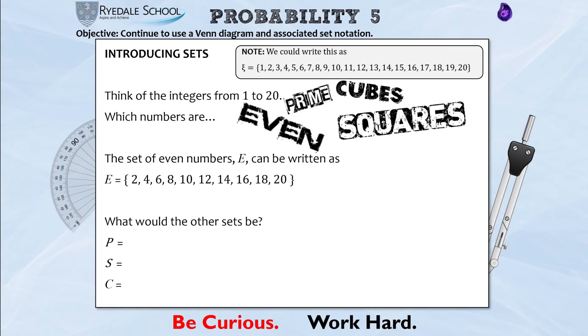Let's get our brains awake. I want you to think of the integers, so the whole numbers between 1 and 20, and we're going to think about which of those numbers are even, prime, cube numbers or square numbers.